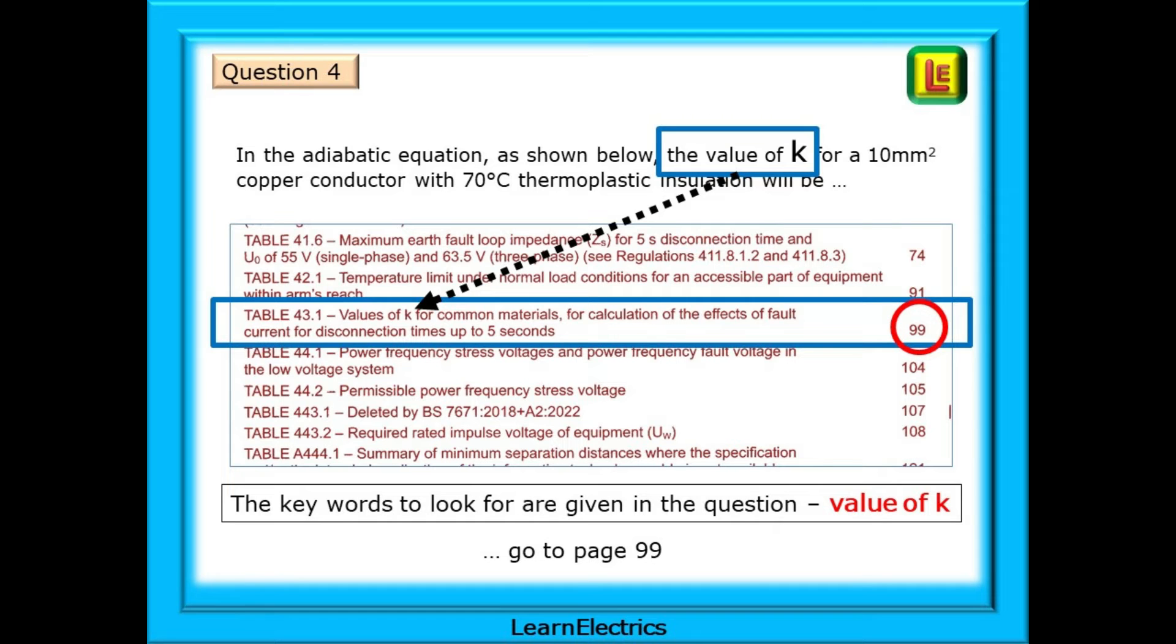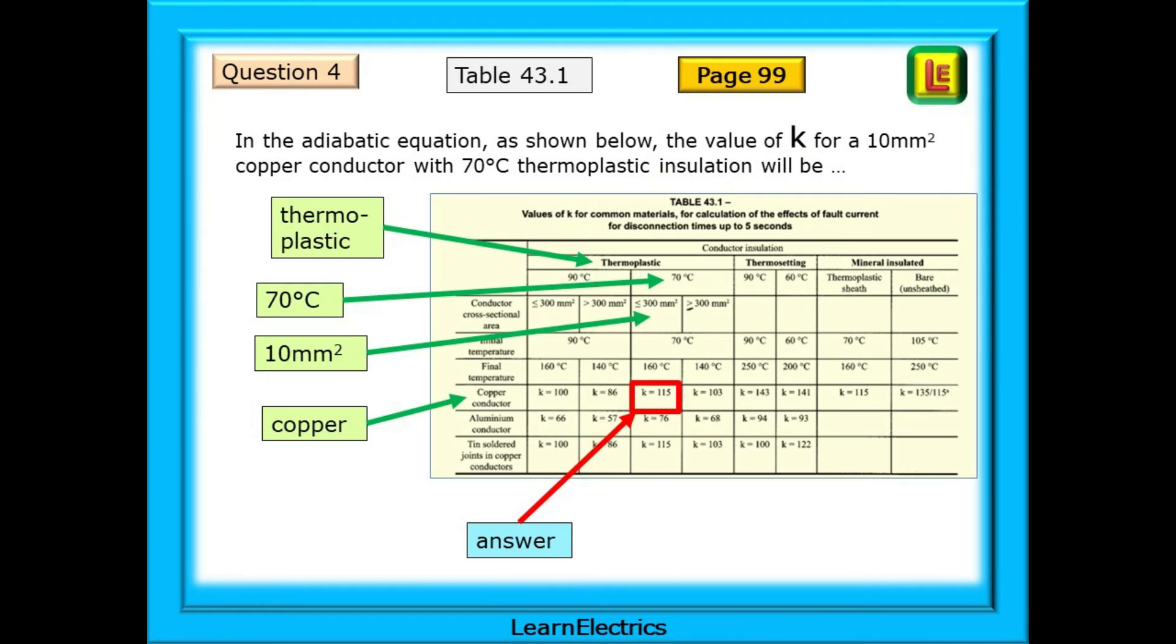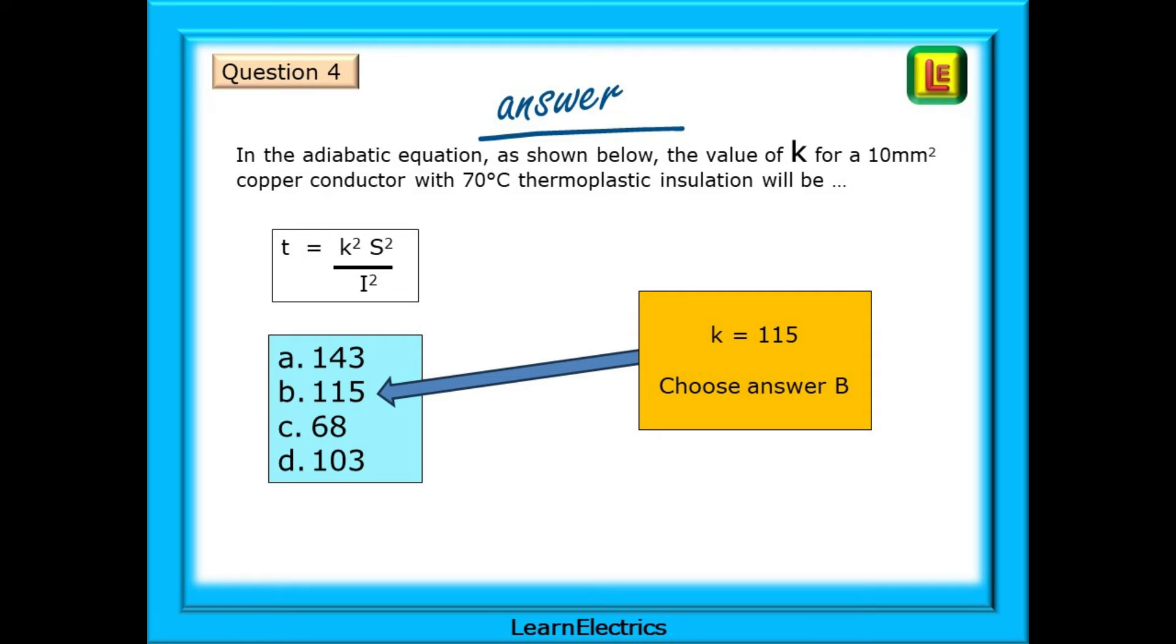The key words to look for are values of K, and table of tables shows that this is on page 99. Just as before, use the information in the question to narrow your search down to columns and rows. Thermoplastics is first, and this eliminates half of the table. Now, 70 degrees, and we are down to just a quarter of the table. The question tells us 10 square millimetre conductors. So, find the column that shows up to, but not more than, 300 square millimetres. And there is only one column of interest now. Look down the left-hand side, and find the word copper as given in the question. Where row and column cross is our answer. K equals 115. Now that we know that K is 115, we should choose answer B. And how easy is that?